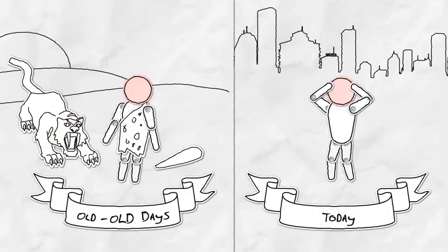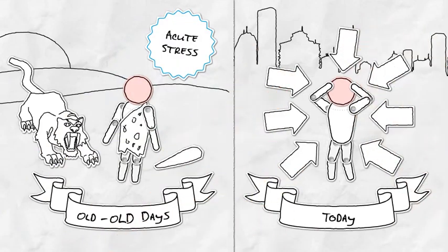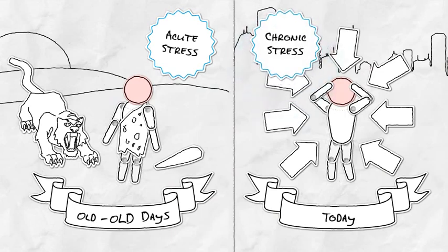So that's two kinds of stress. The burst of stress, followed by a return to normal, like in the old, old days, is acute stress. The never-ending kind that many of us live with now is called chronic stress.